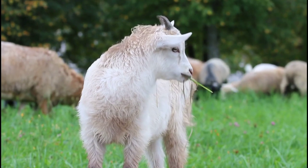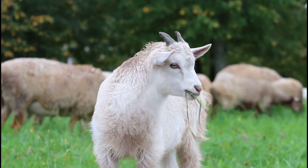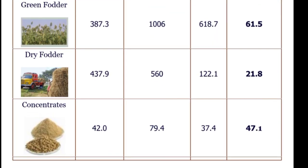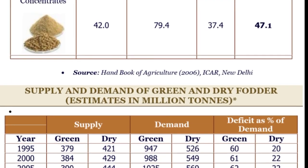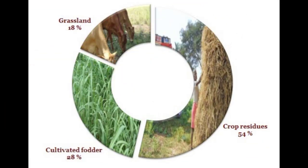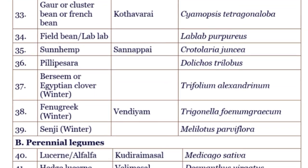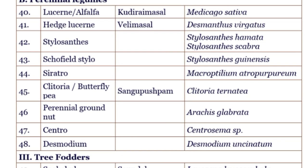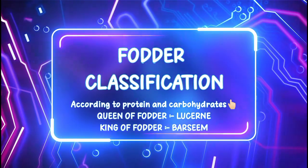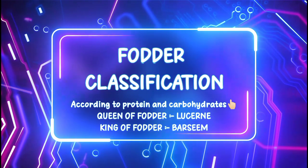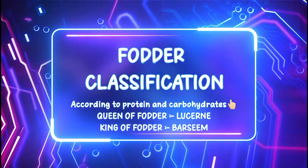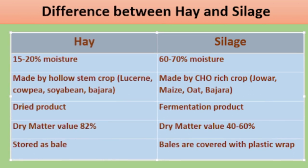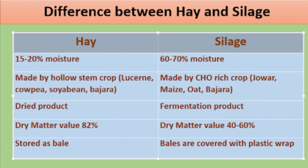The next topic is fodder. In fodder, you should know the classification according to season and contents. For example, season-wise: rabi, kharif, and enzyme and protein contents according to leguminous and non-leguminous categories, along with examples. You should know important fodders like berseem, oat, and maize, and also remember their botanical names. You should know the classification of fodder according to protein and carbohydrates, and know the queen of fodder and king of fodder. Also know the difference between hay and silage.